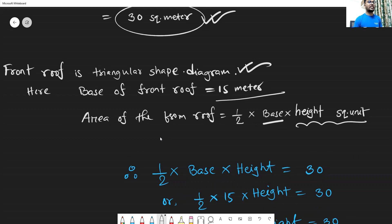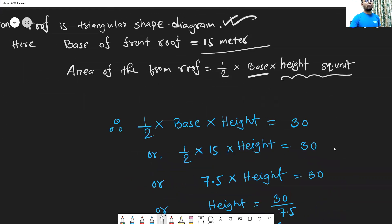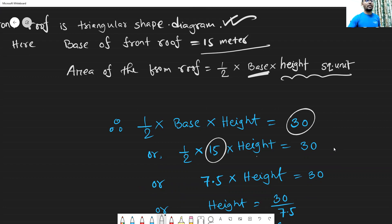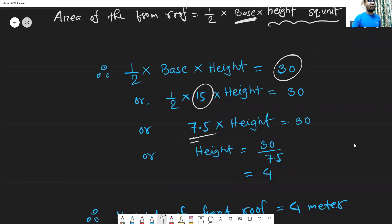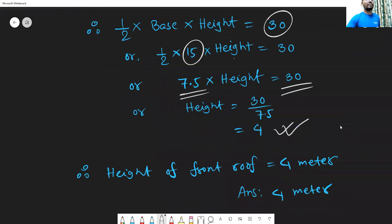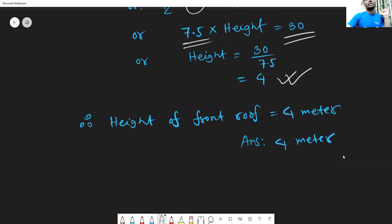Using the formula: area equals half times base times height. Substituting, we get 7.5 multiplied by the height equals the computed area. Solving, the height of the front roof is 4 meters.